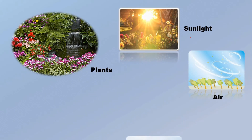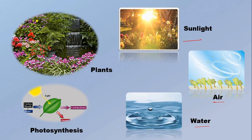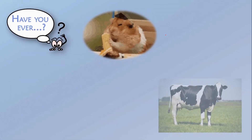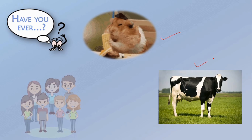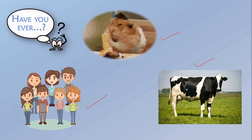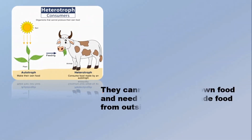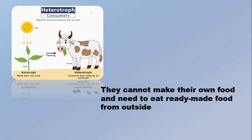We all know that plants can make their food using sunlight, air, and water through photosynthesis. But have you ever wondered how do animals get their food? Can a cow make its own food like plants? Can we humans prepare food inside our body? No. Animals, including us, depend on other plants or animals for food. That is why animals are called heterotrophs, meaning they cannot make their own food and need to eat ready-made food from outside.